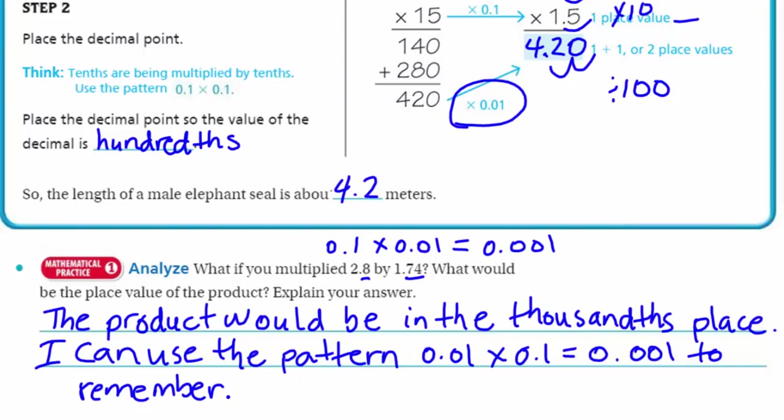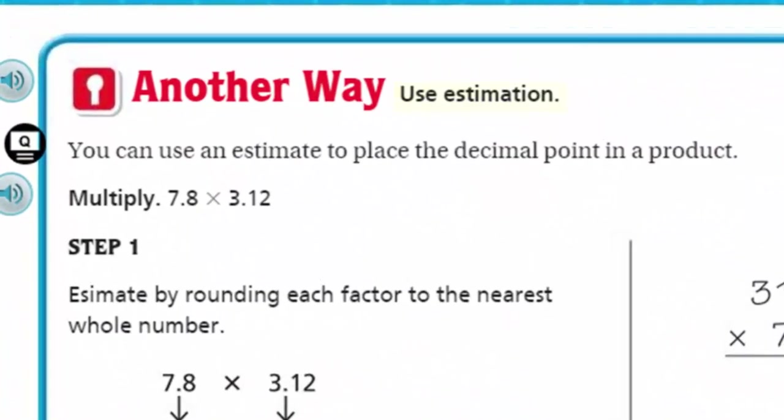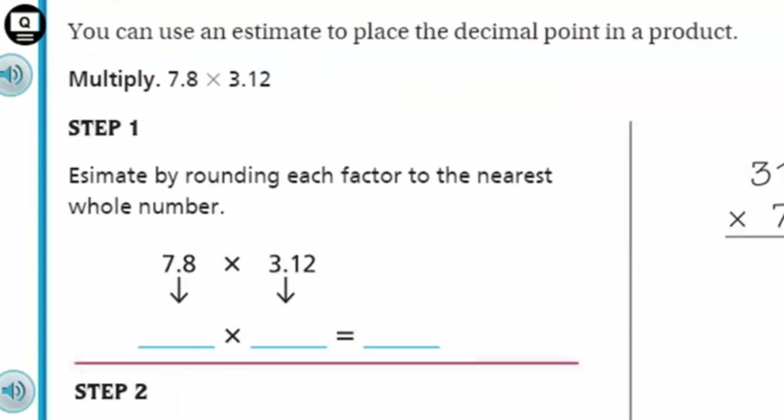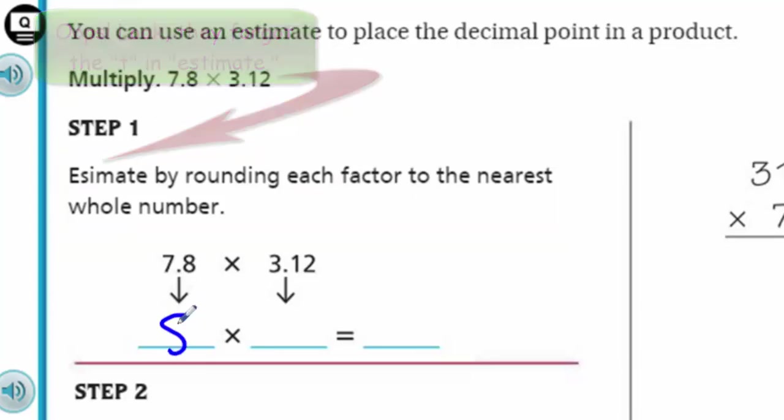Page master! Woohoo! Yes! See, there's another way. How about that? Use estimation. We've done estimation before. It's a quick guess, gives us a rounded number. It says you can use an estimate to place the decimal point in a product. Here we have multiply 7.8 times 3.12. Step one says estimate by rounding each factor to the nearest whole number. So 7.8, well, it's just going to be 8, nothing tricky about that. And 3.12 is just going to be 3. So our answer should come around 24.